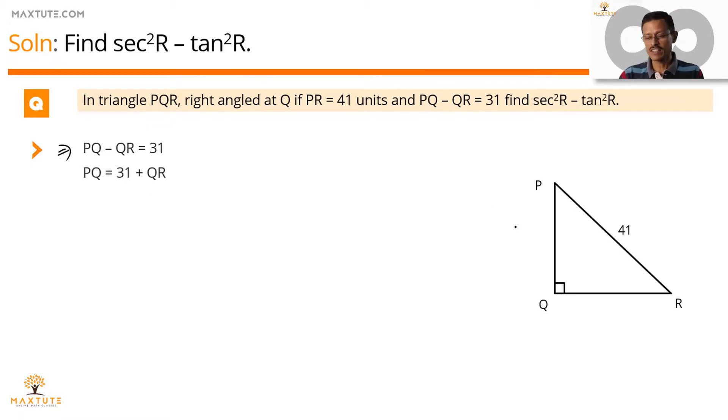What we'll do, step one, we'll compute the measure of these two sides, PQ and QR, using Pythagoras theorem. PR square is equal to PQ square plus QR square. That's Pythagoras theorem.